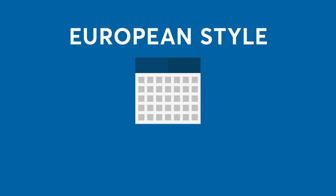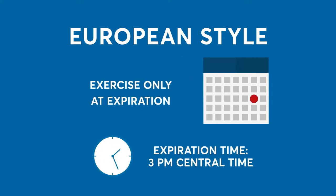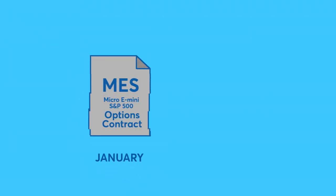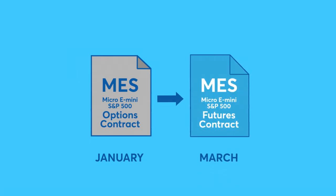Unlike the quarterly options, these options are European-style, meaning the only time the long holder can exercise is at expiration. They will expire at 3 p.m. Central Time and deliver the nearest expiring Micro E-Mini futures contract. For example, a January option that expires in the money would deliver the March futures contract. Whether traders end up long or short the futures position, they would have exposure to the market until they either trade out of the resultant futures position or until the futures contract expires in March.